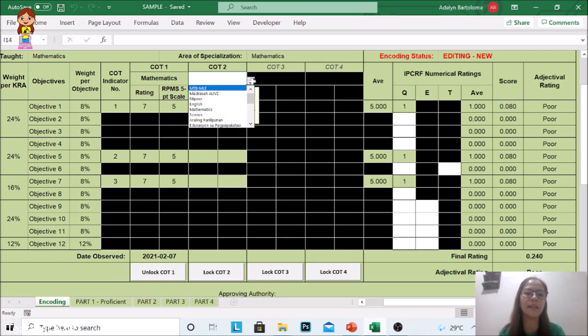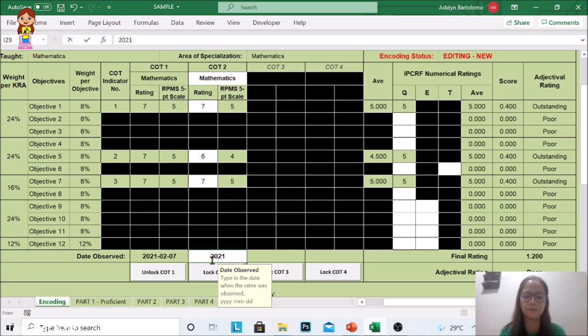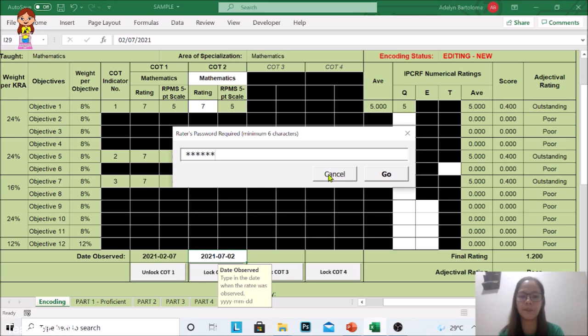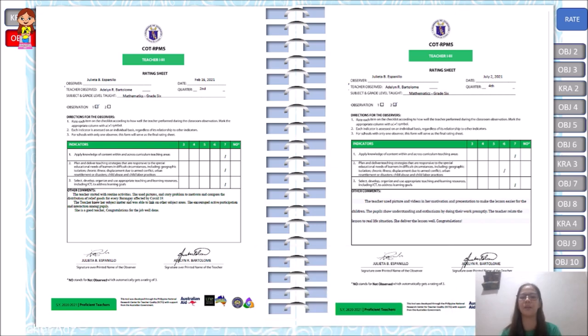Sa COT2, pwede na rin natin itong rate. Math. Ang rating ko ay 7, 6, 7. Kailan ako nagpa-observe? Lock lang po din. Enter ulit yung password na ginamit na kanina. Meron na tayong ratings for objective 1, objective 5, and objective 7. Makikita nyo po dito, meron ng average. Meron na akong 5, 5, 5 para doon sa tatlong in-observe ng aking observer. Let us go back to our presentation.